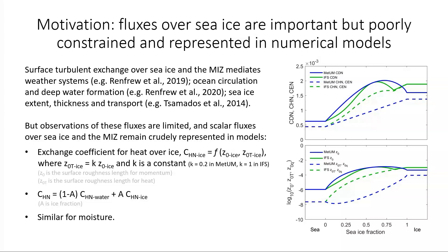For heat, for example, the exchange coefficient is given as a function of the roughness lengths for momentum and heat, and the heat roughness length is given simply as proportional to the momentum roughness length, with the constant of proportionality varying considerably between different models. The exchange coefficient as a function of ice fraction is then given simply as a linear interpolation between that for water and that for ice, and a similar treatment is used for moisture exchange.